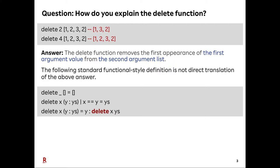How do you answer the question: what is the delete function? Most people answer like this — the delete function removes the first appearance of the first argument value from the second argument list. However, this standard functional style definition is not the first relation of this answer. There is a gap between our explanation and the definition of the function.